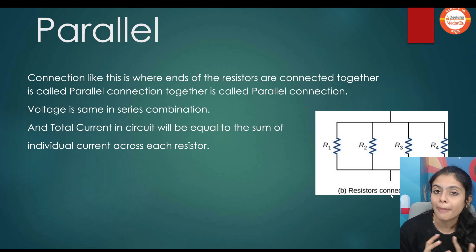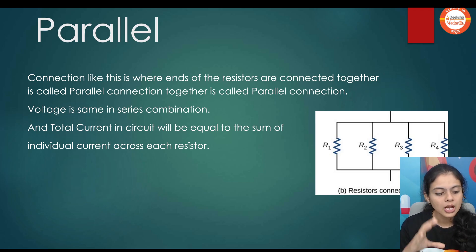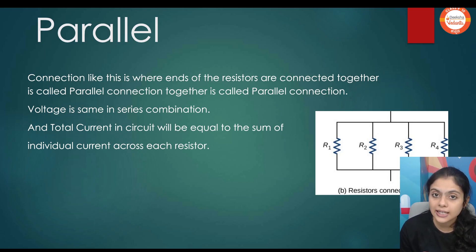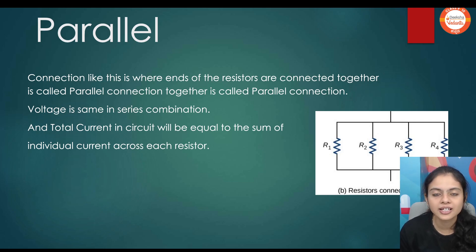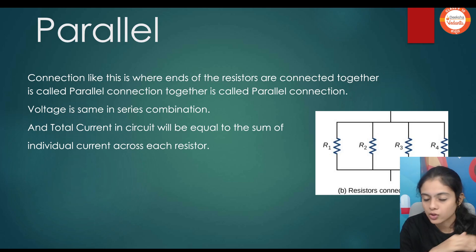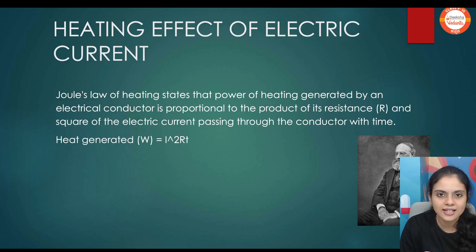In a parallel combination, the formula is 1 by R-equivalent is equal to 1 by R1 plus 1 by R2 and so on. That's easy.